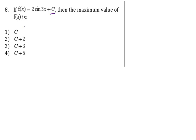Number 8: what is the maximum value of f(x)? We measure from c — whatever the c value is — and we go up and down by two. So the maximum value would be c plus two, because from c you're going up by two. Therefore the answer is c + 2.